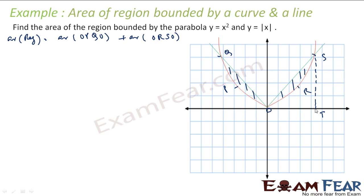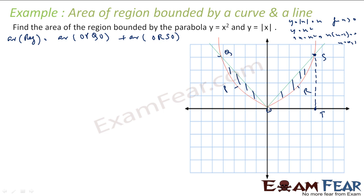The question is: what is the value of this intersection point? This point is (0, 0), but the other point I need to determine. For x > 0, y = |x| becomes y = x. Comparing y = x and y = x², I get x = x², so x(x − 1) = 0, giving x = 0 or x = 1. So this point is (1, 1) and this point is (1, 0), meaning X varies from 0 to 1.